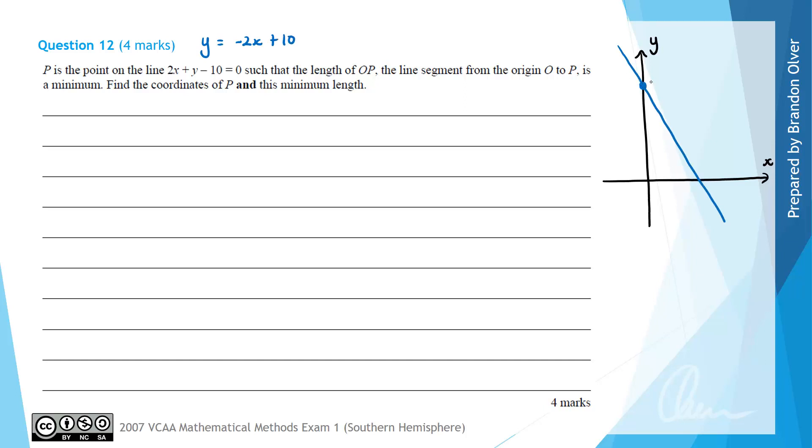So that line would look something like this. And it would have a y intercept here at 0 comma 10 and an x intercept here at 5 comma 0. And then there'd be a length here, which we'll call L, such that the origin from 0, 0 to the point P, which has coordinates x comma y, but y could be written as minus 2x plus 10, is a minimum.